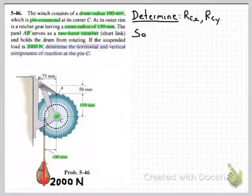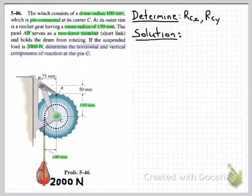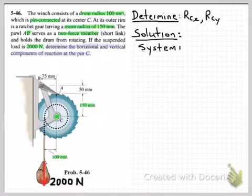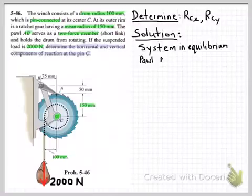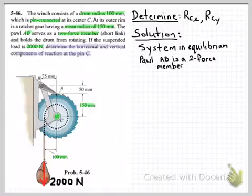Okay so now we're ready to start considering our solution. And we're assuming that the pawl is locked in place and that the system is in equilibrium. So we can then go and use our equations of equilibrium. So write down that we're also going to make use of the fact that the pawl AB is a two force member.